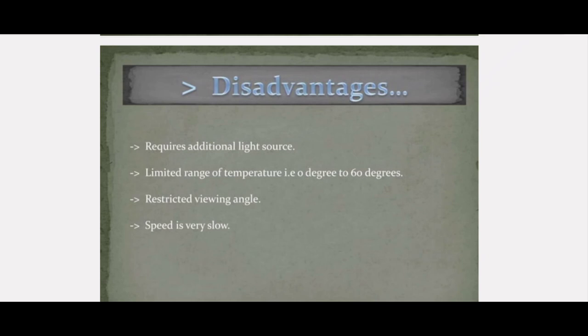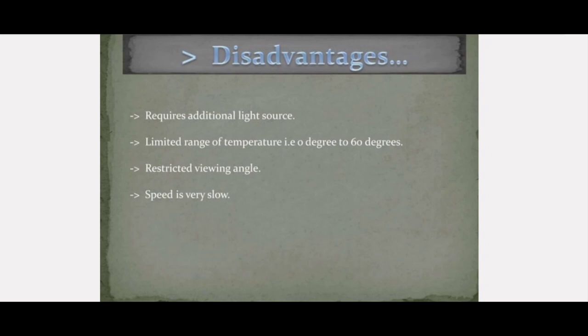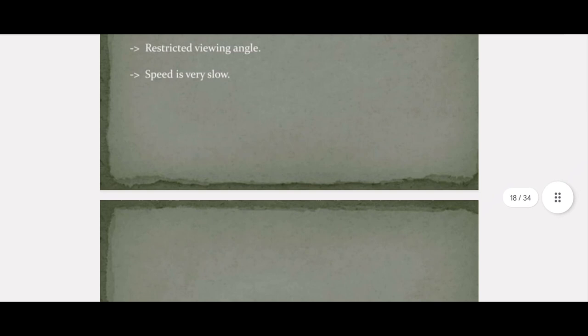In summary, LCD is a passive device that does not emit light — it only alters the light. Two polarized filters are used: one vertical and one horizontal. To change the orientation, electrodes are used. When no voltage is applied, it produces white color; when voltage is applied, it produces black. For colors, a color filter is placed and the primary colors are red, blue, and green. This is the basic construction of LCDs.